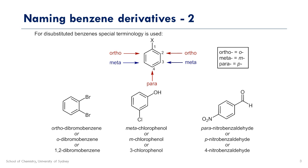Our third example starts with the highest priority group — a benzaldehyde, an aldehyde attached to the benzene. Starting with numbering 1 here, it doesn't matter which way we go around, because ultimately the nitro group will be on the third carbon. So this ends up being called para-nitrobenzaldehyde, P-nitrobenzaldehyde, or 4-nitrobenzaldehyde.